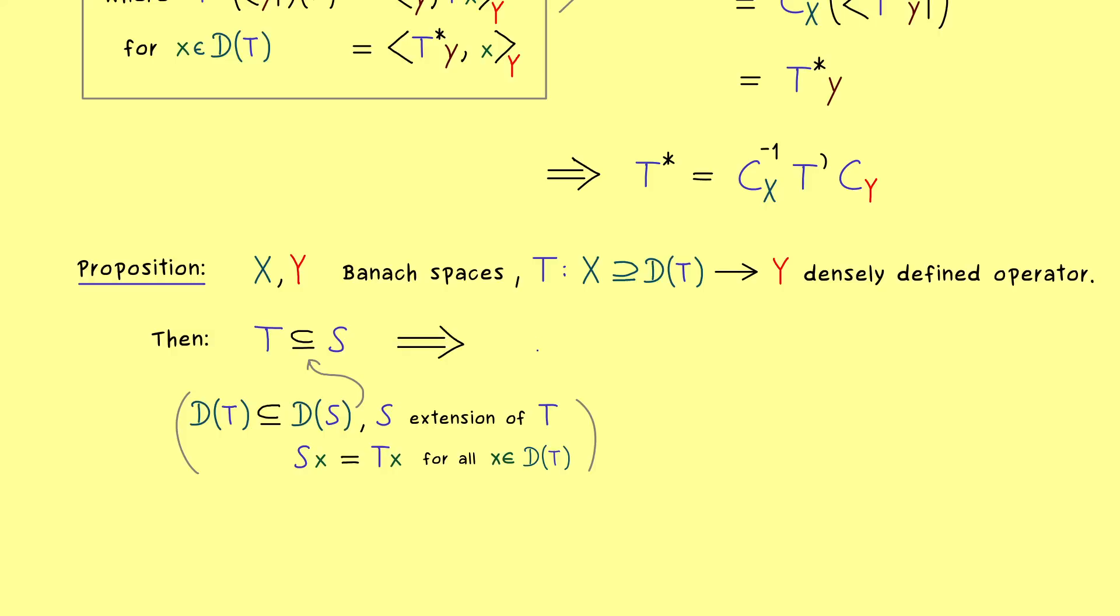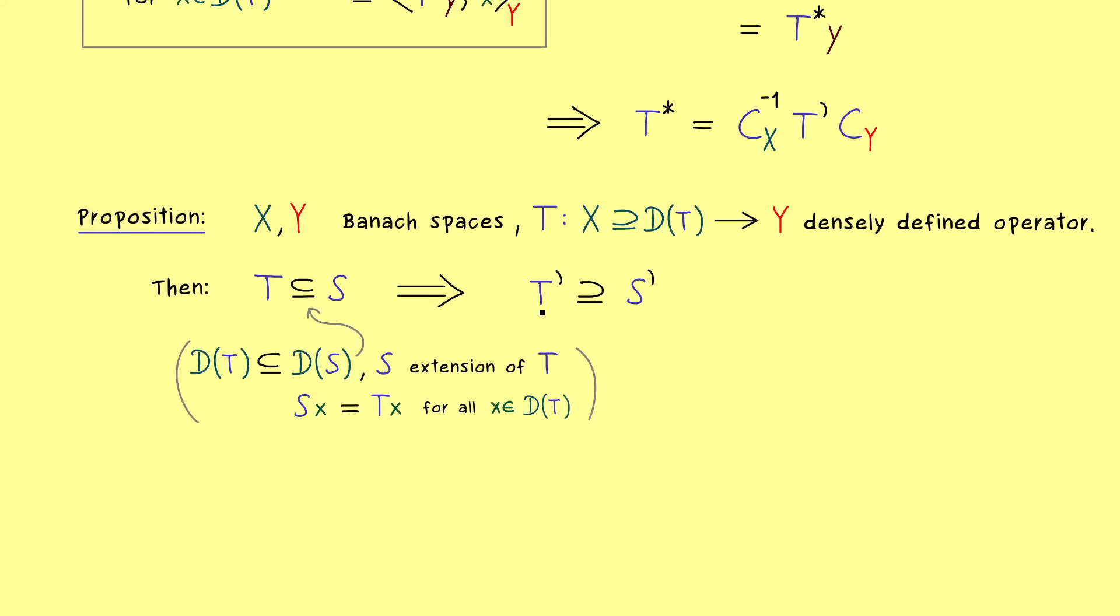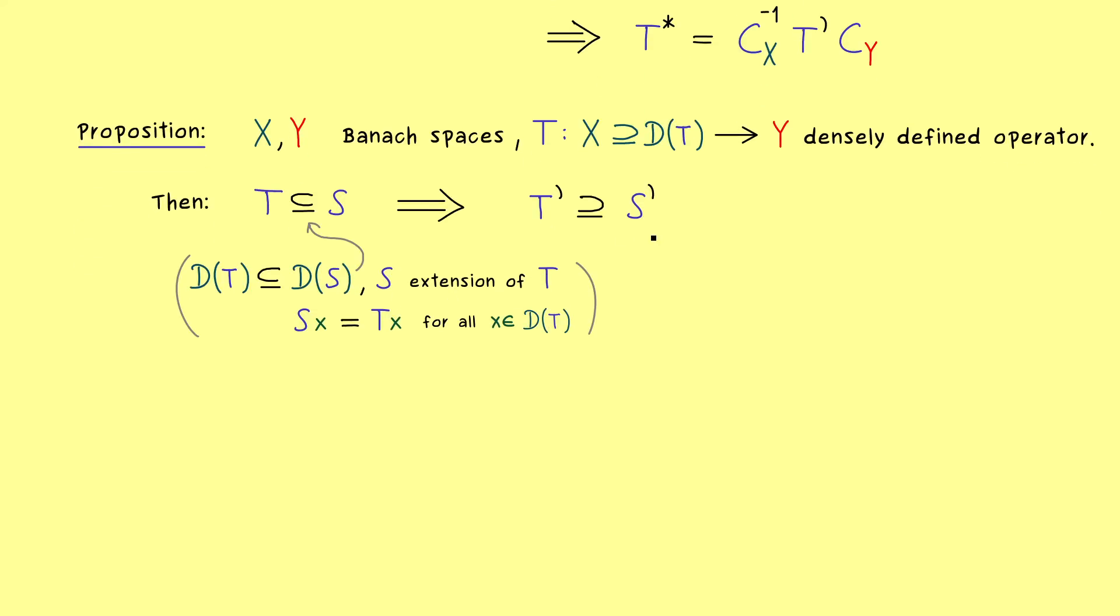So here maybe it's possible to extend this operator T by increasing the domain. But then, and you could see that as a disadvantage, we get the opposite result for the adjoints. So now T' could be bigger than S'. Or to say it in the same words as before, now T' is an extension of S'. But if you want to read it the other way around, you would say that S' is now a restriction of T'.